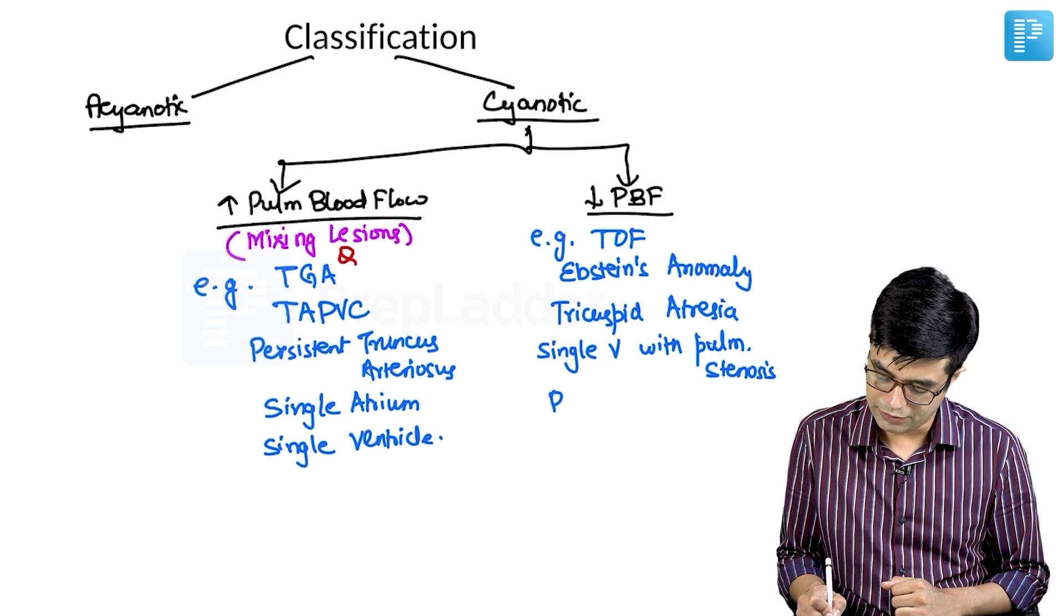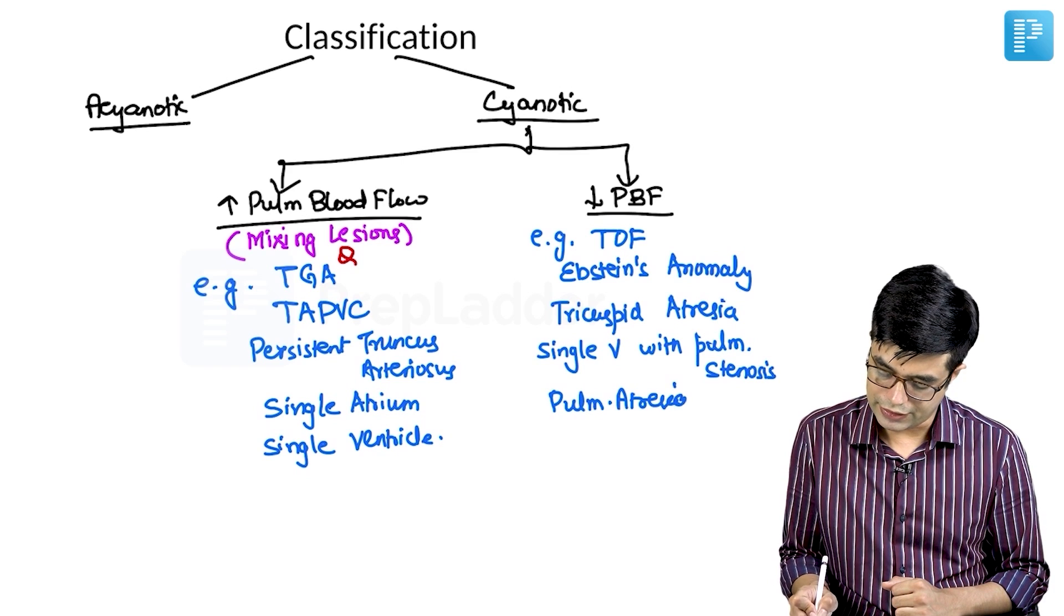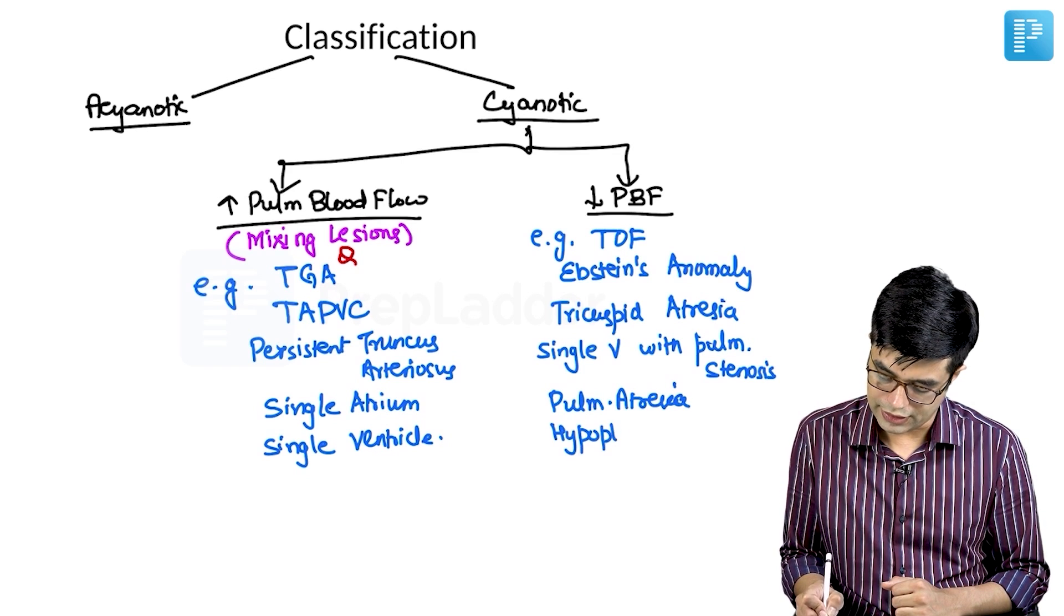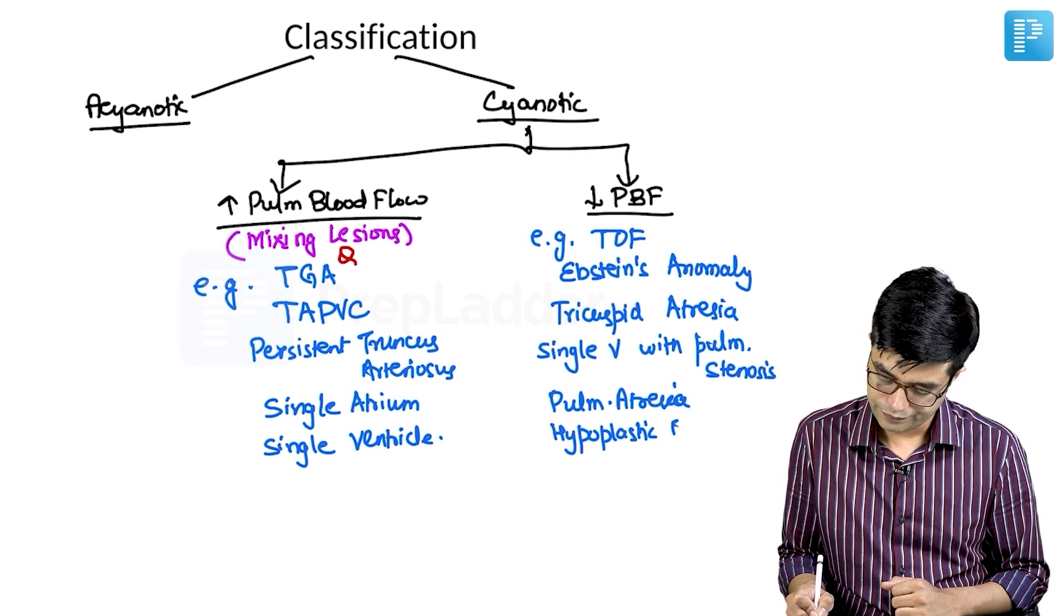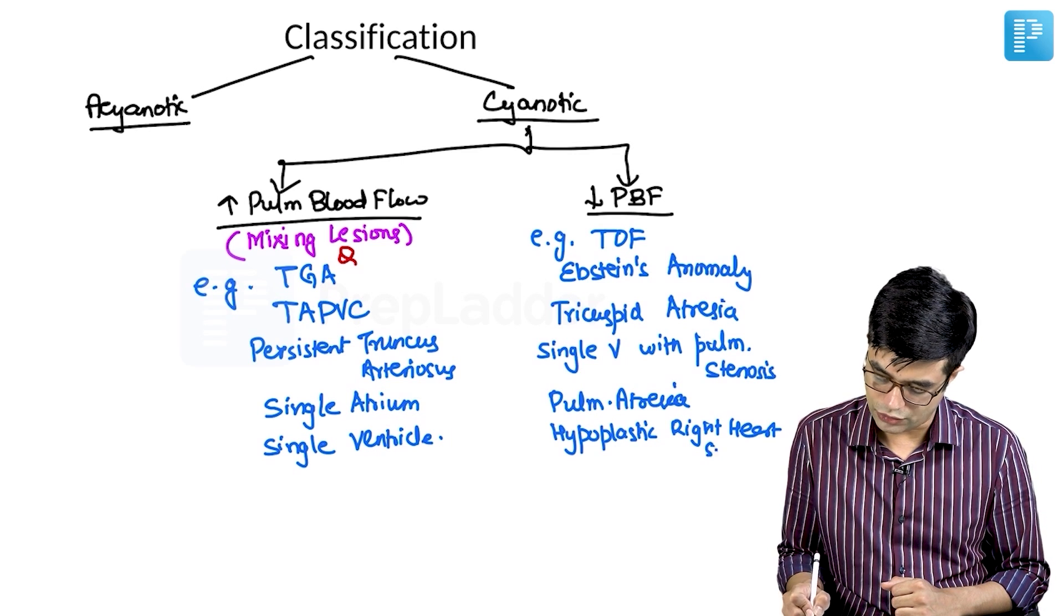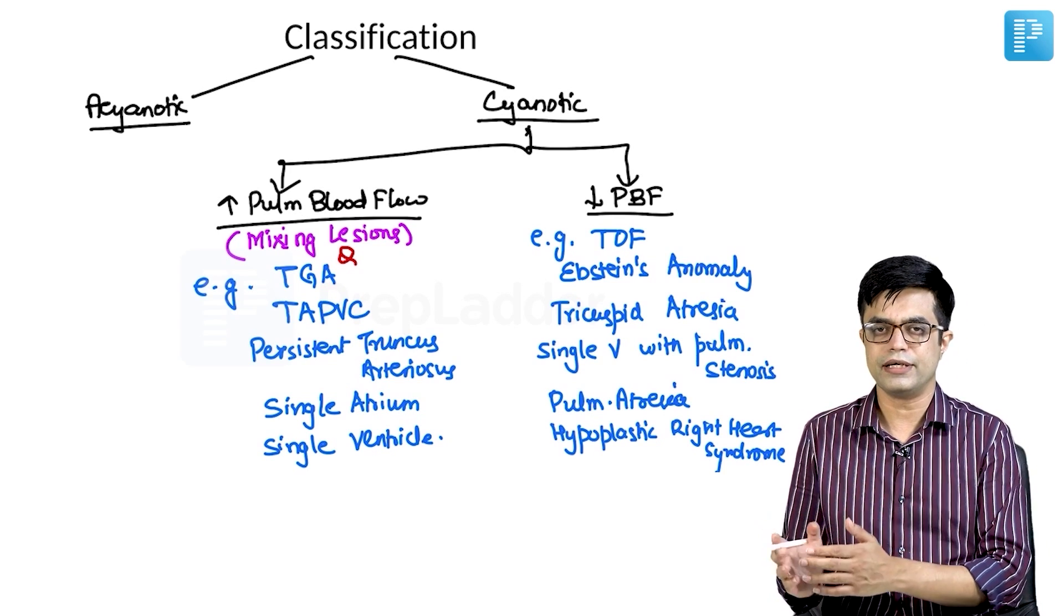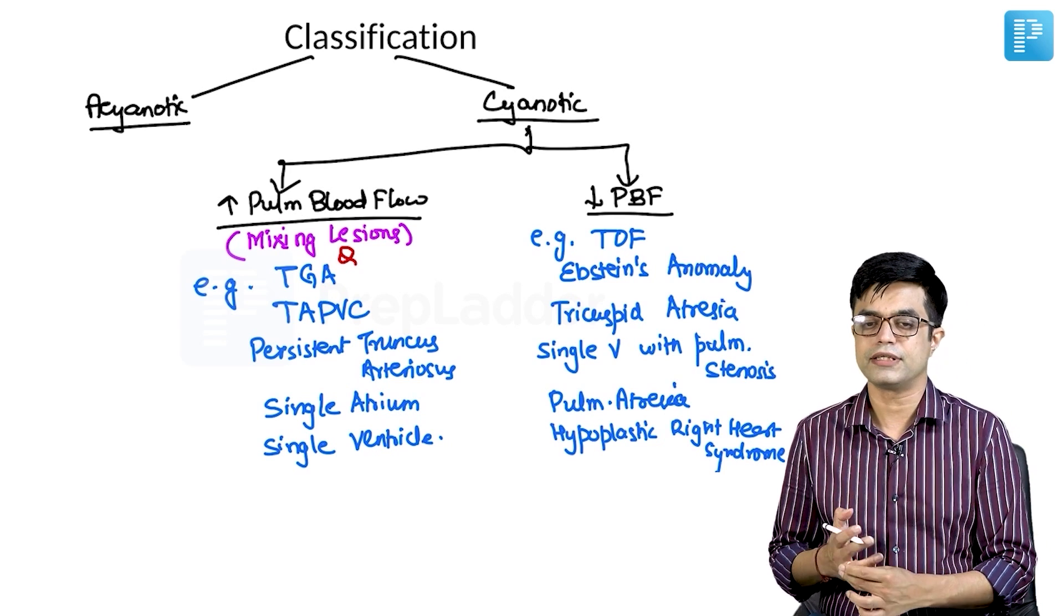Then there can be single ventricle with pulmonary stenosis. Then we have pulmonary atresia, and we have a condition called hypoplastic right heart syndrome. Hypoplastic left heart syndrome is usually cyanotic, but more specifically, it is categorized as a duct dependent lesion. So that is something we will discuss later.